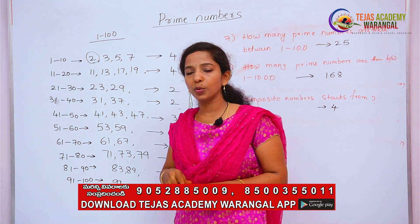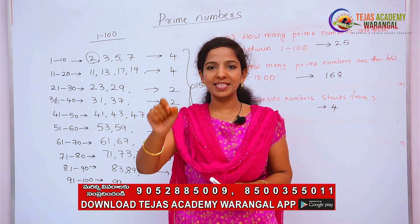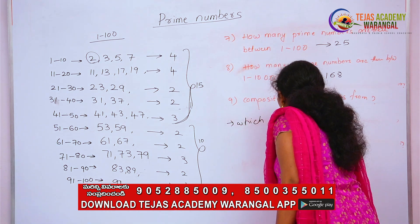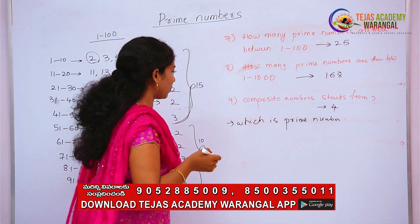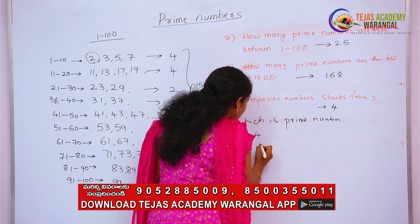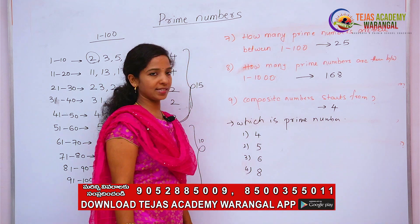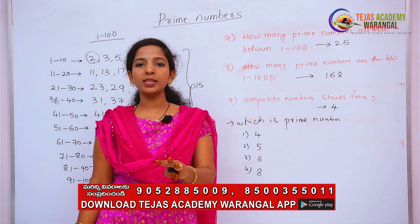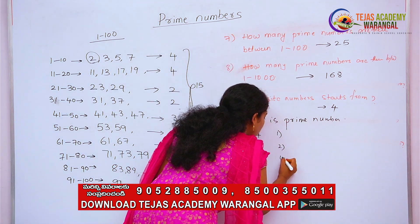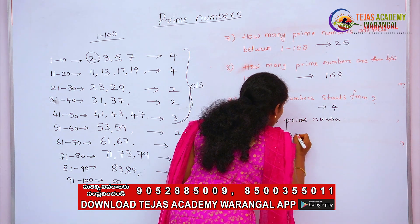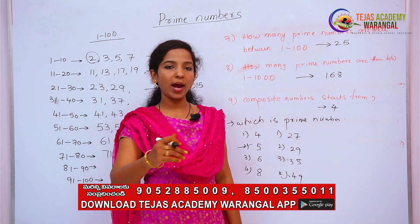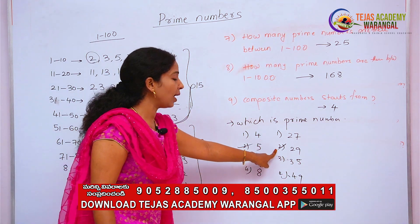In an exam you may be asked: which of the following is a prime number? You will be given four options. For example: 4, 5, 6, 8 — the answer is 5. Or another example: 27, 29, 35, 49 — which is a prime number? The answer is 29, because 29 is a prime number. We just need to recall our prime number list to answer.